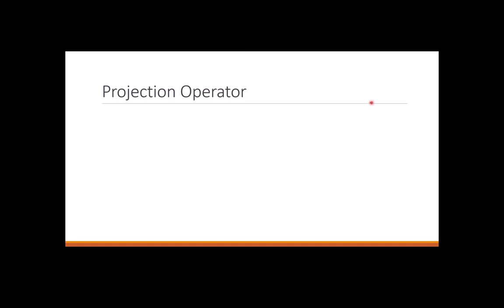So something called the projector operator, which is very important. What is a projector operator? Again, it is the inner product — I keep telling you something very basic, but this is a useful tool. The projection operator is something like this: it's the outer product of a vector. What does it do? It projects a vector to |v_i>. It basically finds the overlap with |v_i>. So if you have a vector and you try to project it to another vector, you can use this projection operator.